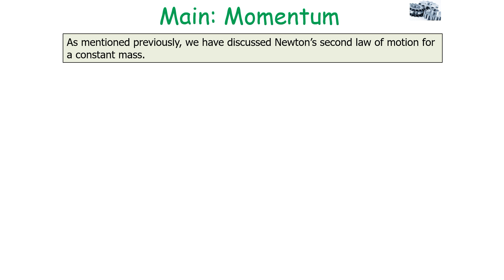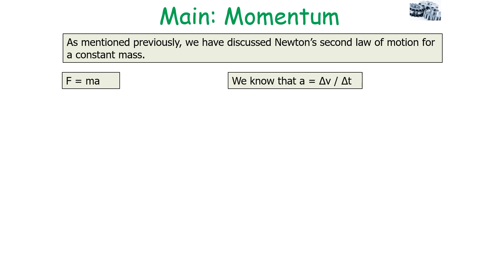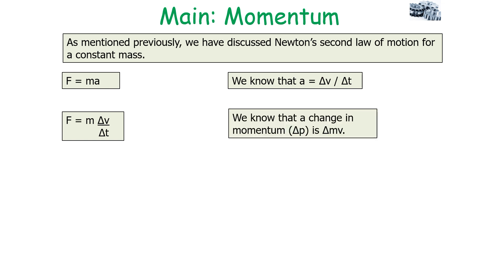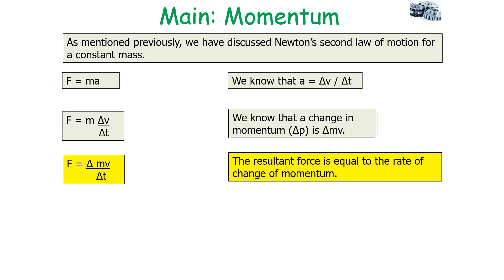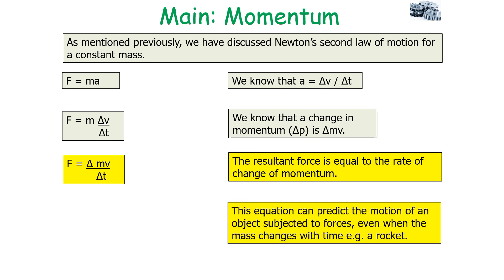Newton's second law for constant mass gives F = ma, and since acceleration equals Δv/Δt, we can substitute to get F = mΔv/Δt. We know that the change in momentum Δp = Δ(mv), so we can write F = Δ(mv)/Δt — the resultant force equals the rate of change of momentum. This equation is very useful because it can predict the motion of an object subjected to forces even when the mass changes with time.